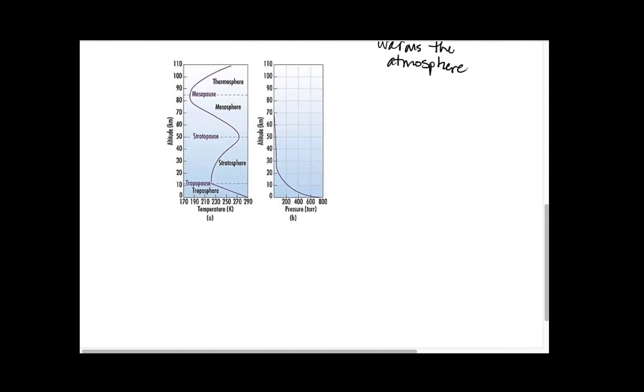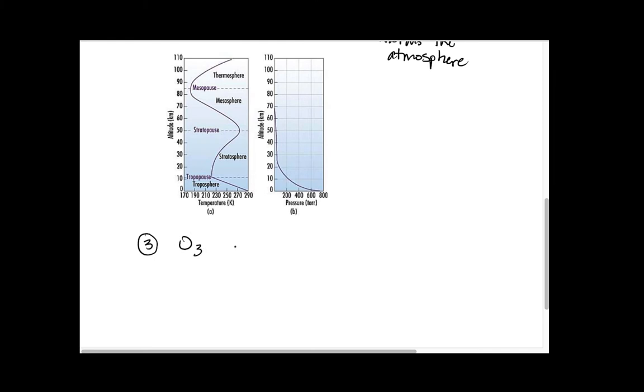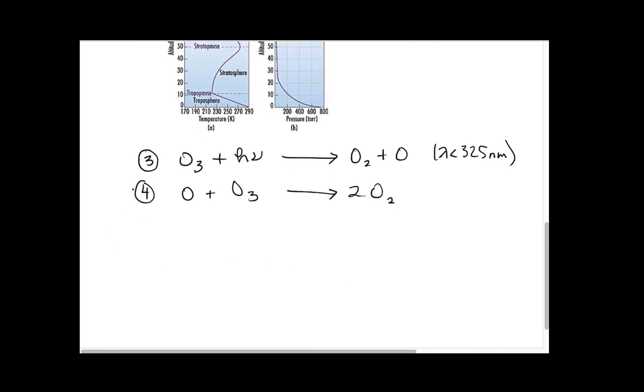In the next step, the ozone gets hit by a photon and it breaks off one of those oxygens for wavelengths less than 325 nanometers. Then that oxygen radical reacts with another ozone and turns it into oxygen. Notice that these reactions have a net destruction of ozone.